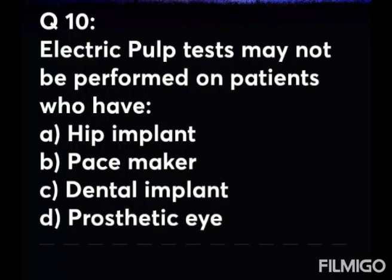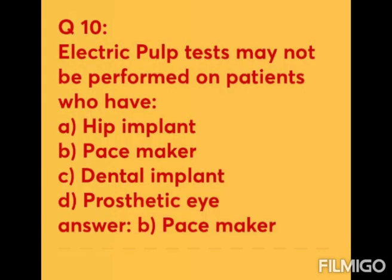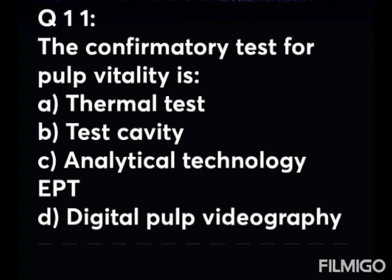Question 10: Electric pulp test may not be performed on patients who have — Option A: hip implant. Option B: pacemaker. Option C: dental implant. Option D: prosthetic eye. The answer is Option B — pacemaker. Electric pulp test may not be performed on patients who have a pacemaker; we should know what type of pacemaker is placed.